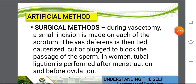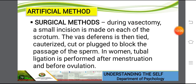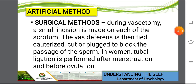The surgical method includes vasectomy and tubal ligation. During vasectomy, a small incision is made on each side of the scrotum, and the vas deferens is then tied, cauterized, cut, or plugged to block the passage of sperm. For women, tubal ligation is performed after menstruation and before ovulation.